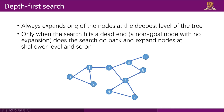DFS has two key characteristics. First, you will always expand one of the nodes at the deepest level of the tree. Second, only when the search hits a dead end does it go back and expand nodes at a shallower level.